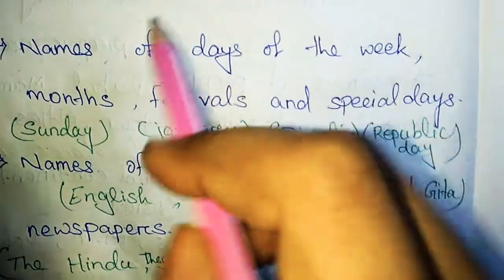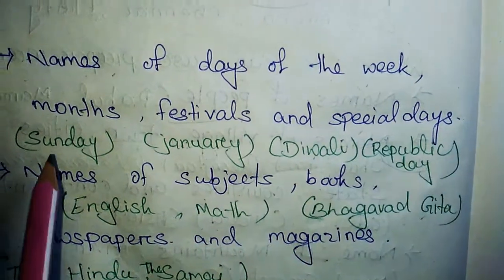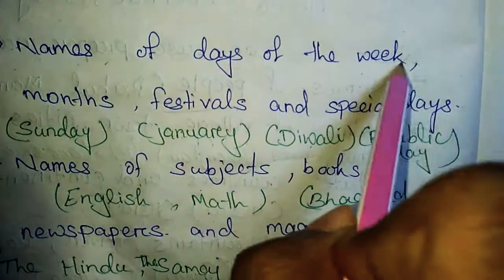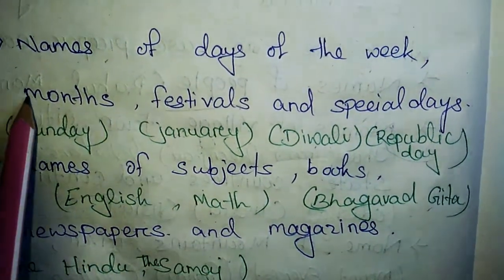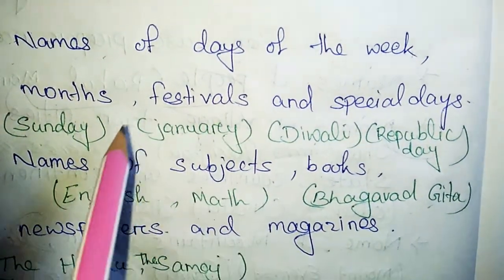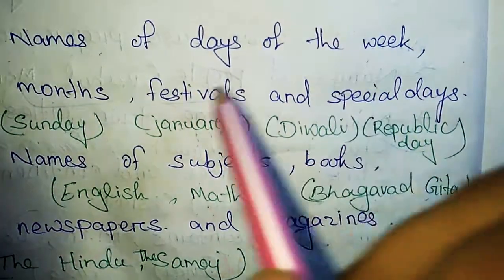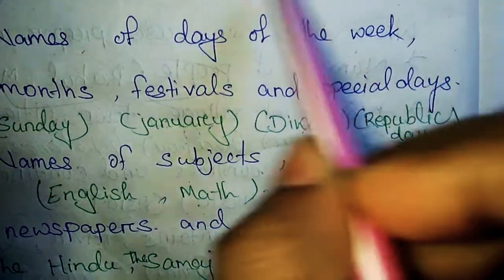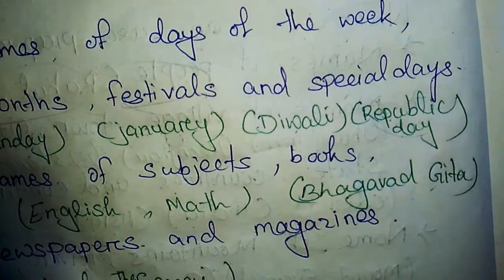Here the names of days of the week, months, festivals, and special days. Here Sunday, Monday, Tuesday — these are the days of the week. And January, February — these are the months. Diwali, Christmas — these are the festival names. And Republic Day, Independence Day — these are the special days. So Sunday, January, Diwali, Republic Day — these are all names and these are examples of proper nouns.